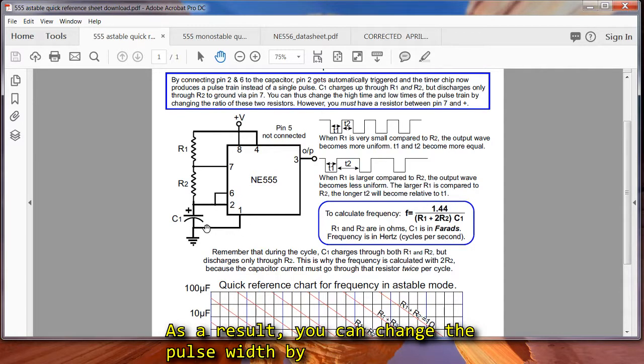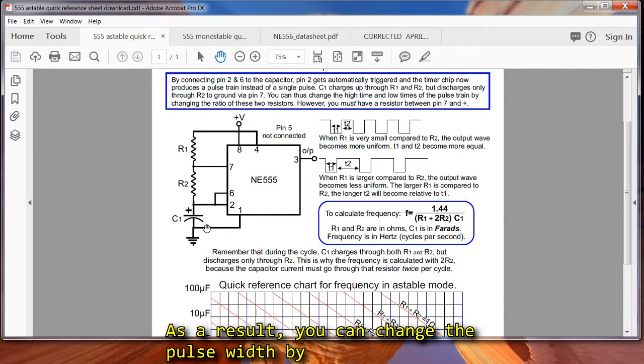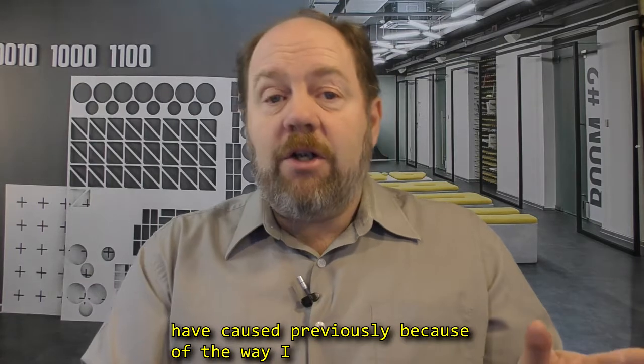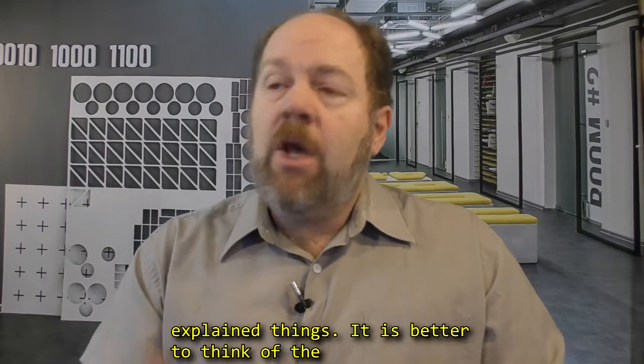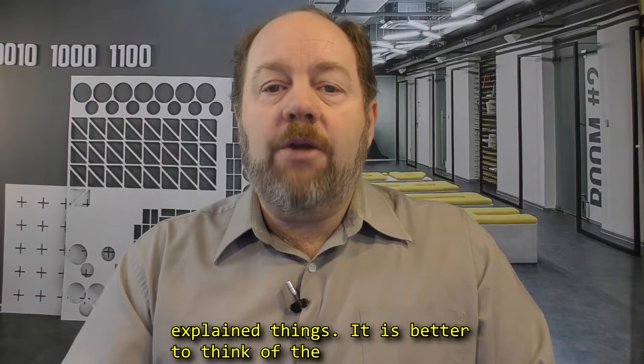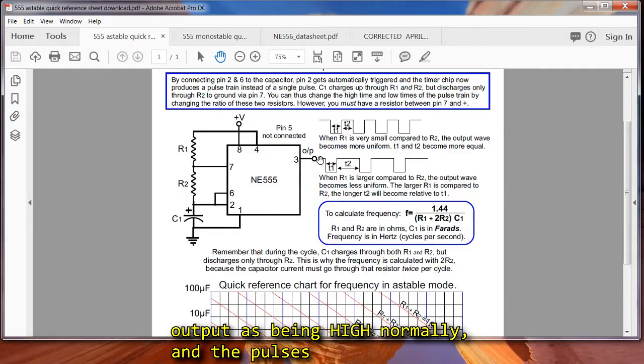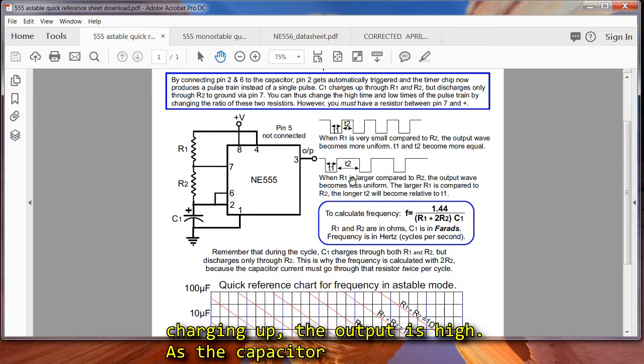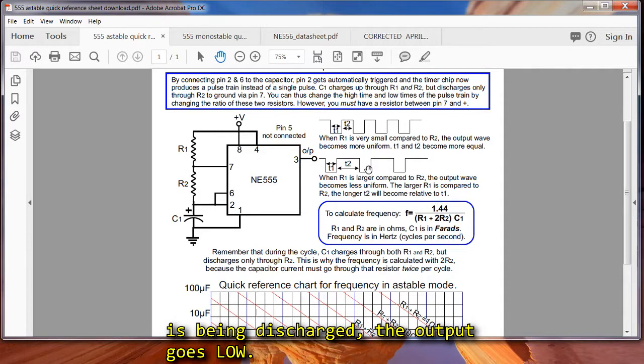As a result, you can change the pulse width by modifying the resistor values. Now once again, I must apologize for any confusion I have caused previously because of the way I explain things, it is better to think of the output as being high normally, and the pulses themselves going low. So while the capacitor is charging up, the output is high. As the capacitor is being discharged, the output goes low.